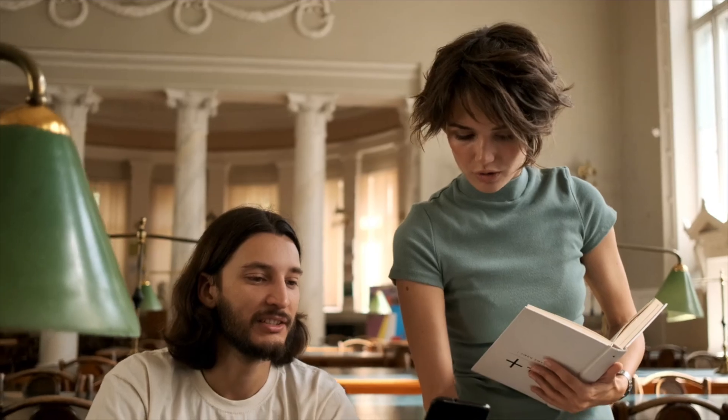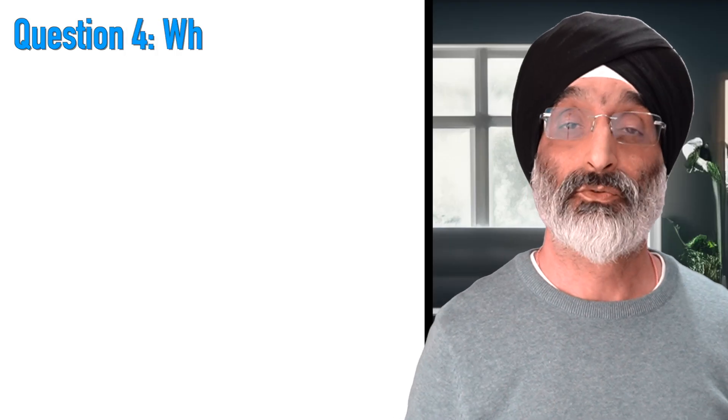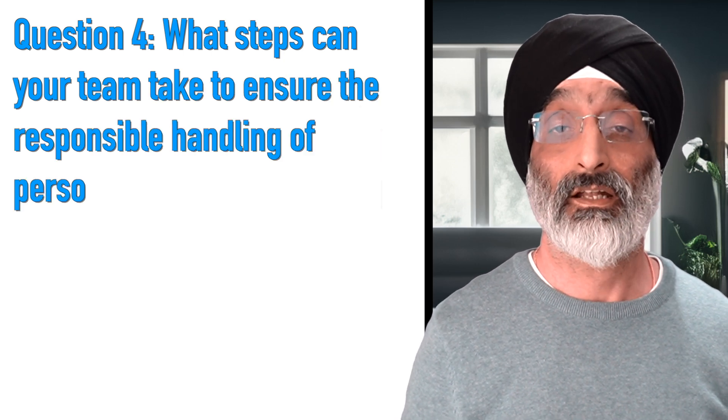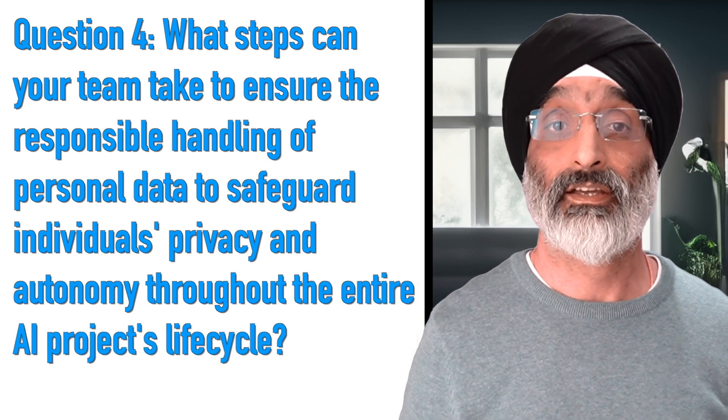Privacy faces significant threats from AI systems both during the development and deployment stages. The design and development processes often involve the use of personal data sometimes without proper consent, posing risks of data exposure. On deployment, AI systems targeting or profiling individuals without their knowledge or consent can infringe upon their ability to maintain a private life, potentially influencing their development and life goals. Such privacy invasions can undermine individuals' rights to manage their lives free from unwanted influence. What steps can your team take to ensure the responsible handling of personal data to safeguard individuals' privacy and autonomy throughout the entire AI project's life cycle?